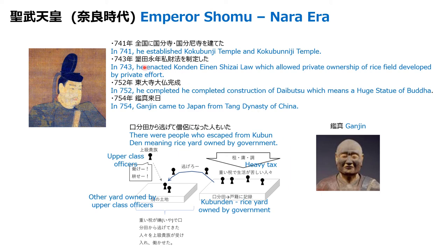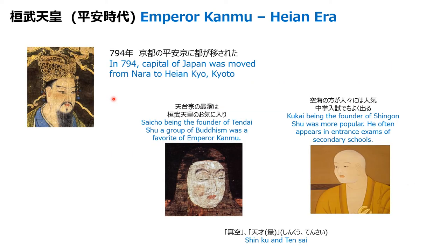So the background of the Konden Enen Shizai law and the visit of Ganjin from China were related to each other. To understand history, recognizing these kinds of relationships is very important. The next era is the Heian era, and the famous emperor was Emperor Kanmu. Buddhism had been thought very important, so it had gained a lot of power and became very noisy.